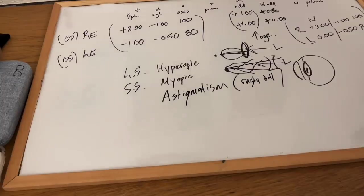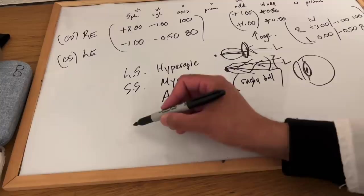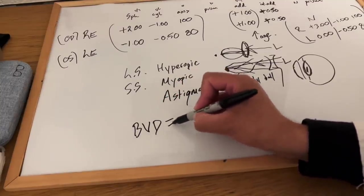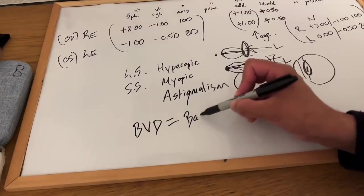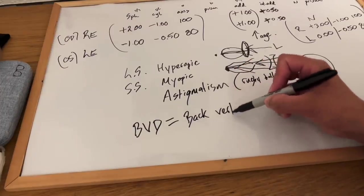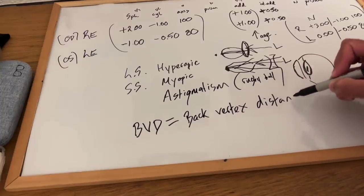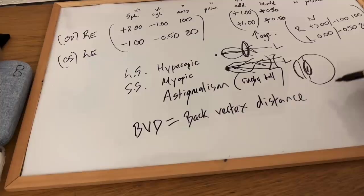Now something else you may see on your prescription abbreviated to BVD. This is your back vertex distance. That could be somewhere in the range of six millimeters to 15, for example, always in millimeters. This reading is basically the distance that the lens in the trial frame sits from your eye there.